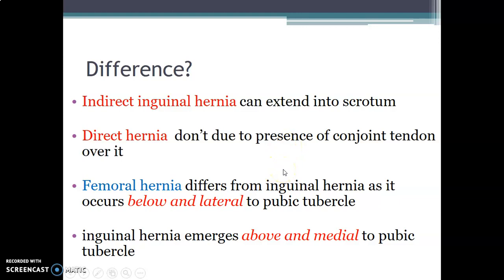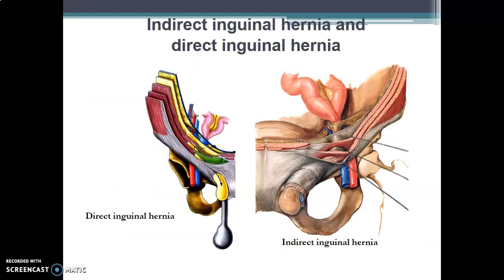Femoral hernias are different from inguinal hernias. Femoral hernias occur below and lateral to the pubic tubercle, because that is the location of the femoral ring. While inguinal hernias usually emerge above and medial to the pubic tubercle, since the superficial ring is above the pubic tubercle.